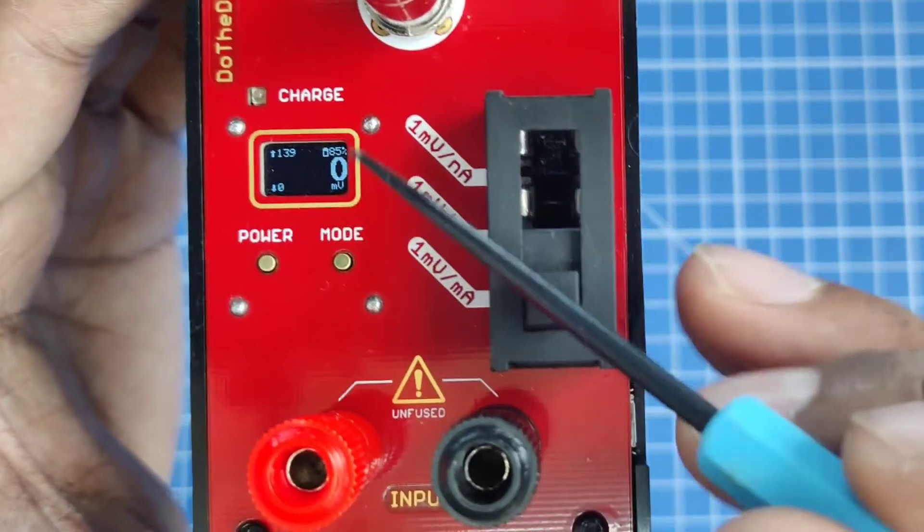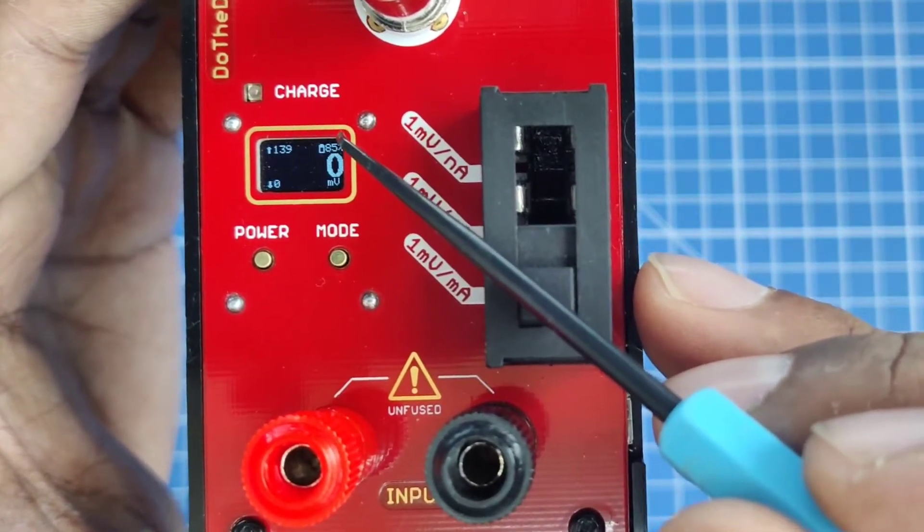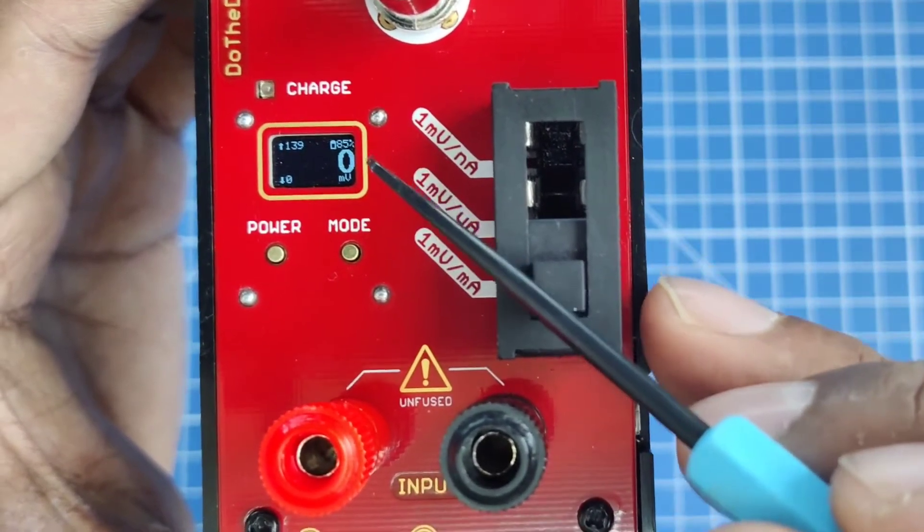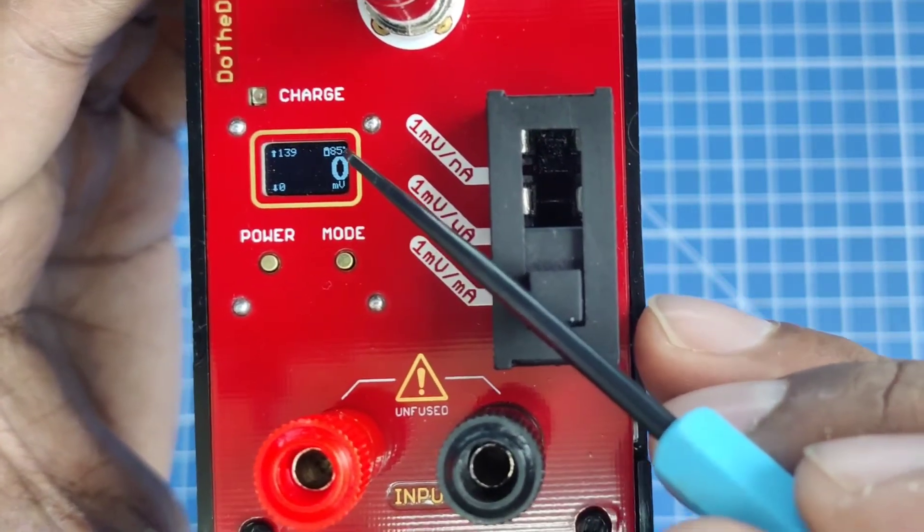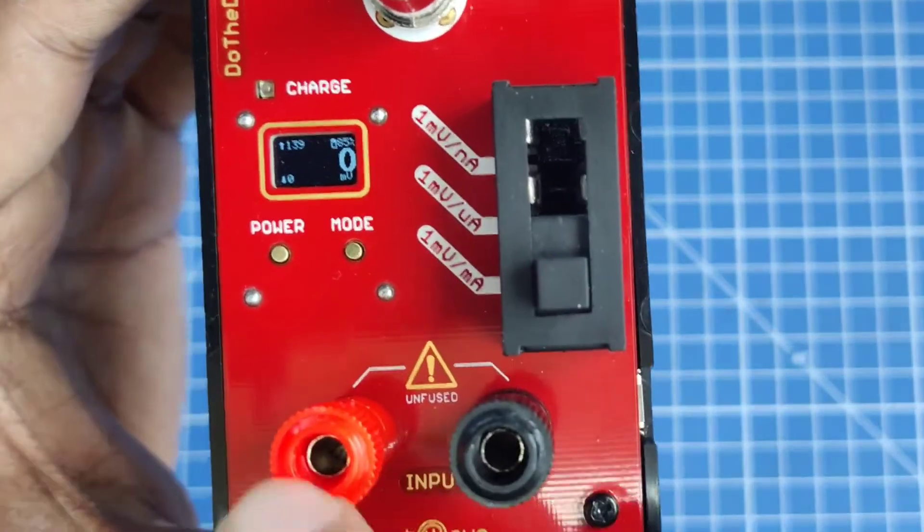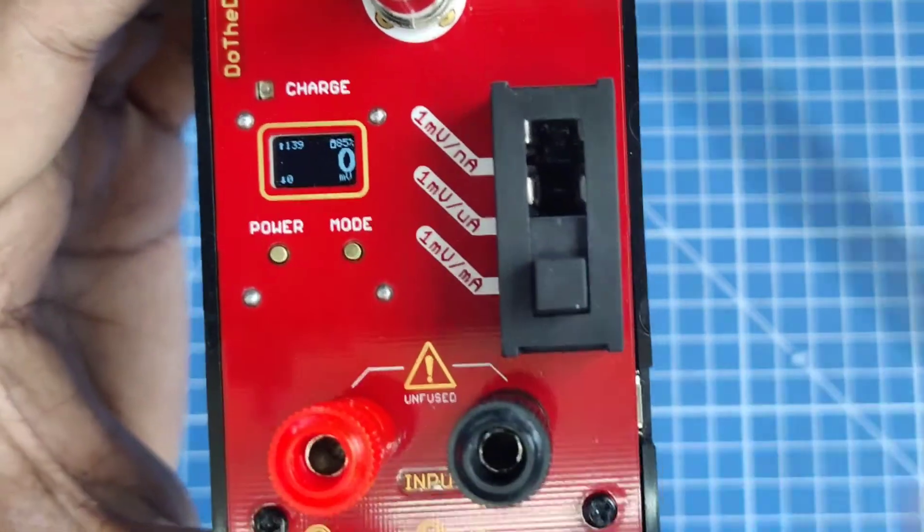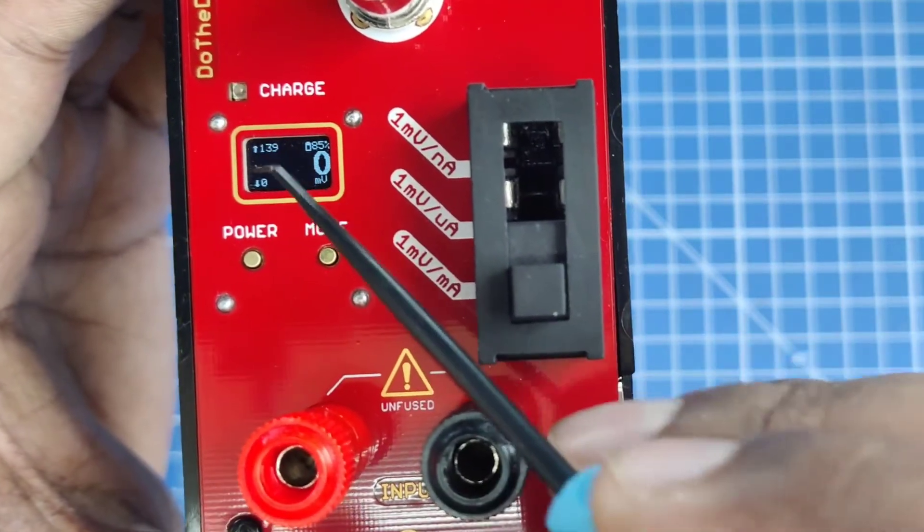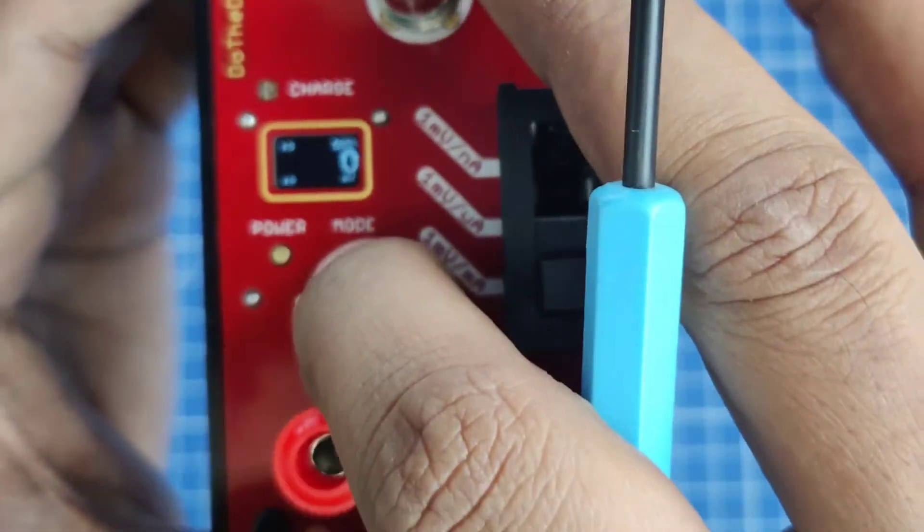On the right top corner it shows the battery percentage that is left. Using the mode switch we can reset the min and max now.